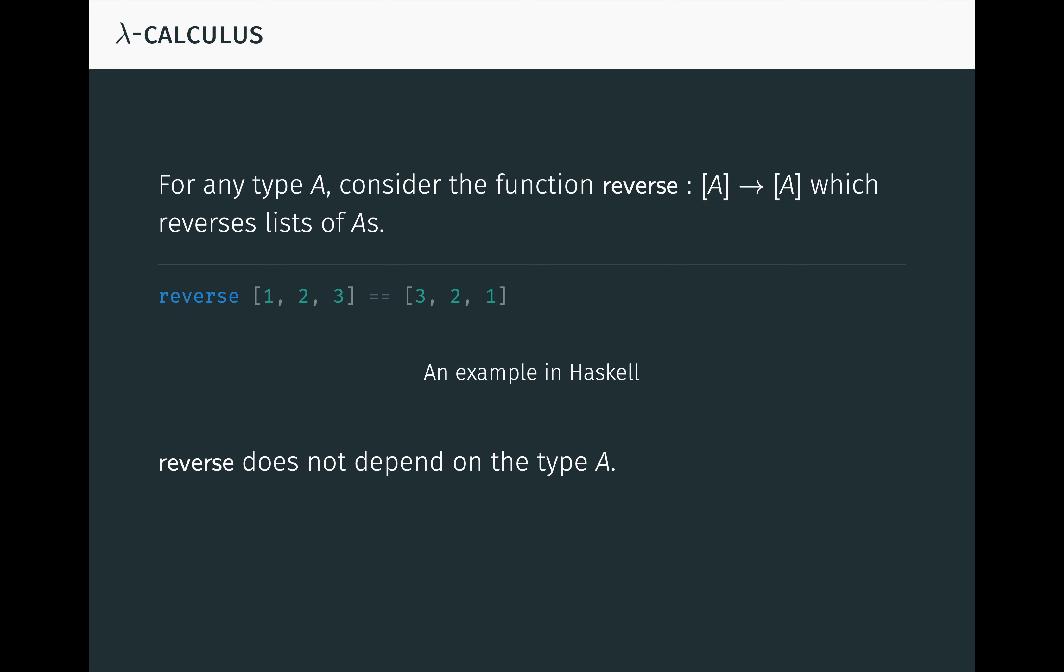Importantly, reverse does not depend on the type A. It behaves in exactly the same way regardless of the type of elements in a list. Therefore, it shouldn't be surprising that reverse is a natural transformation of the list-type functor, which we described in a previous video.